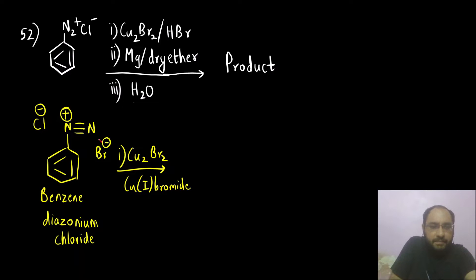Now Br minus will attack the carbon attached to this nitrogen group. N2 is a very good leaving group. As we know nitrogen gas will go away as a good leaving group. This is N2 gas which is present in atmosphere.